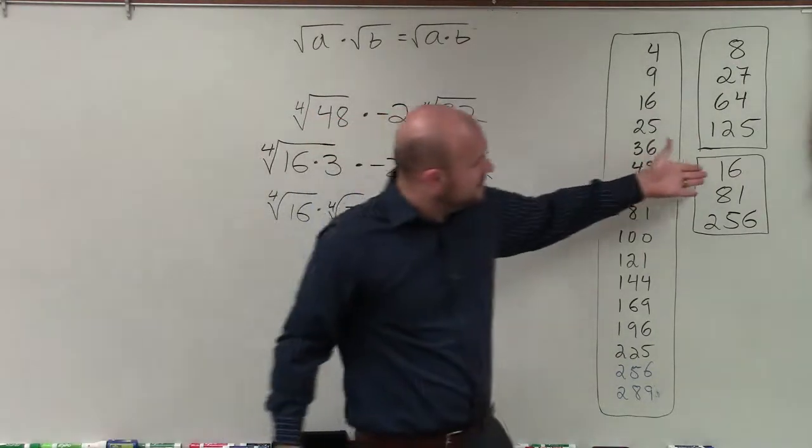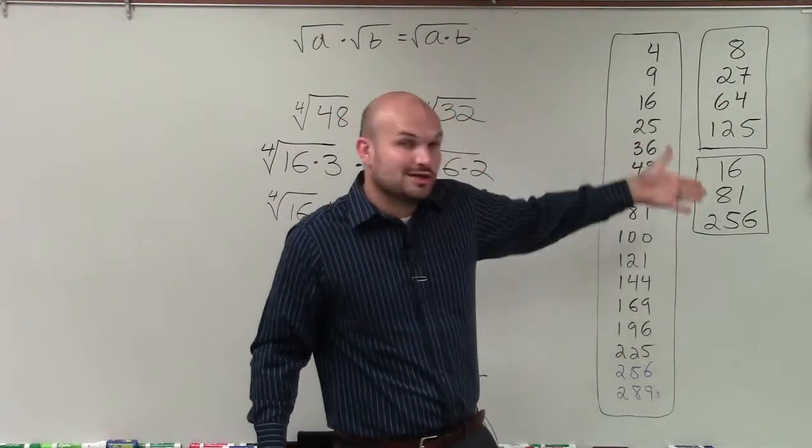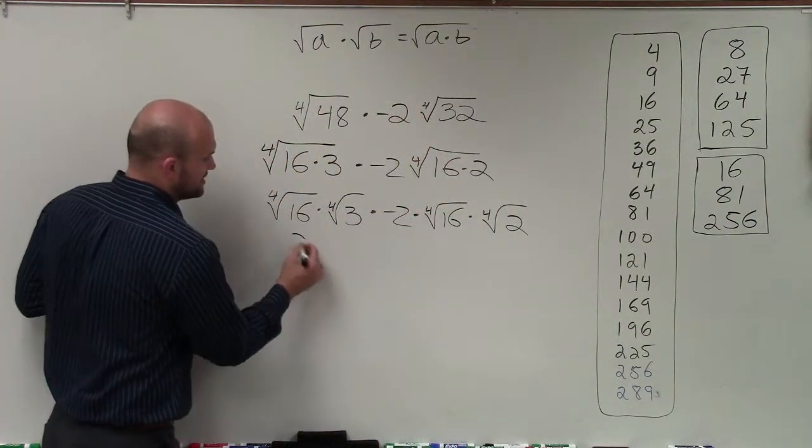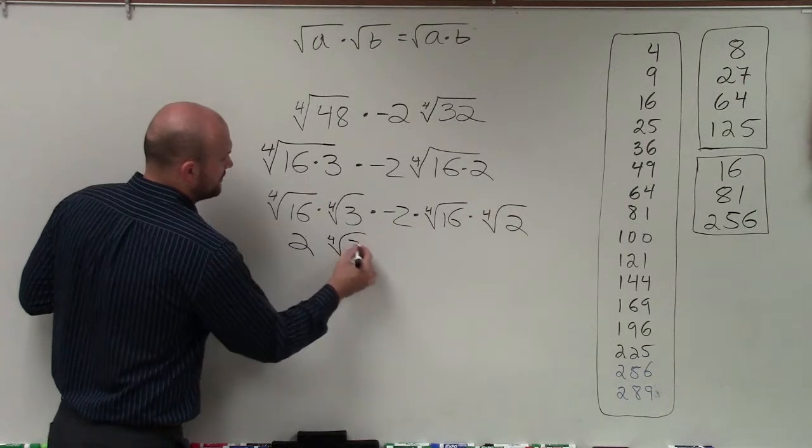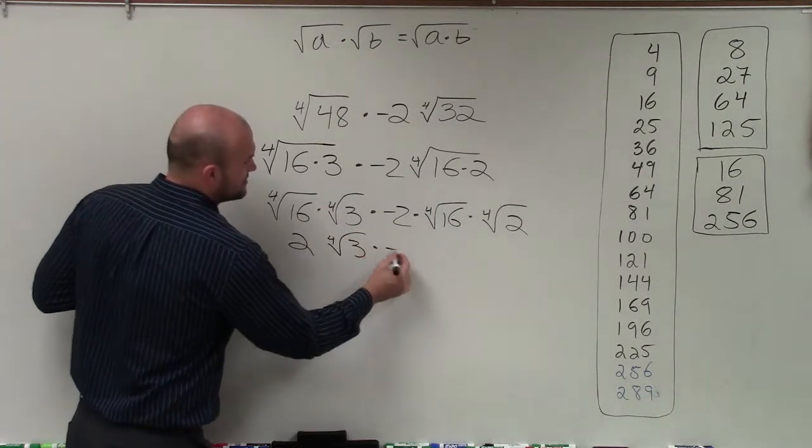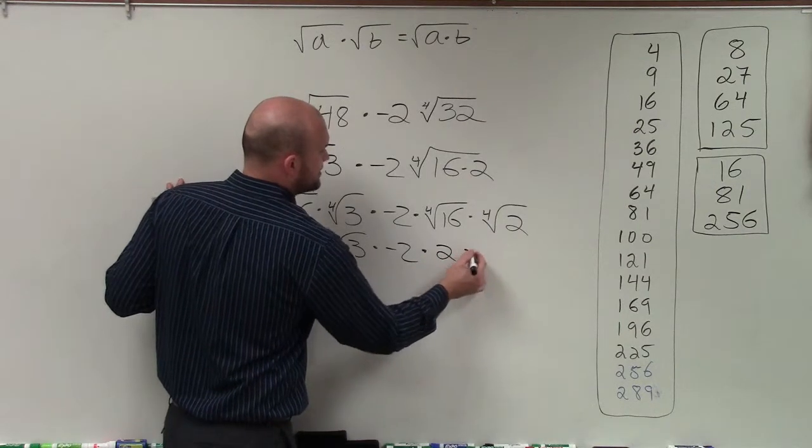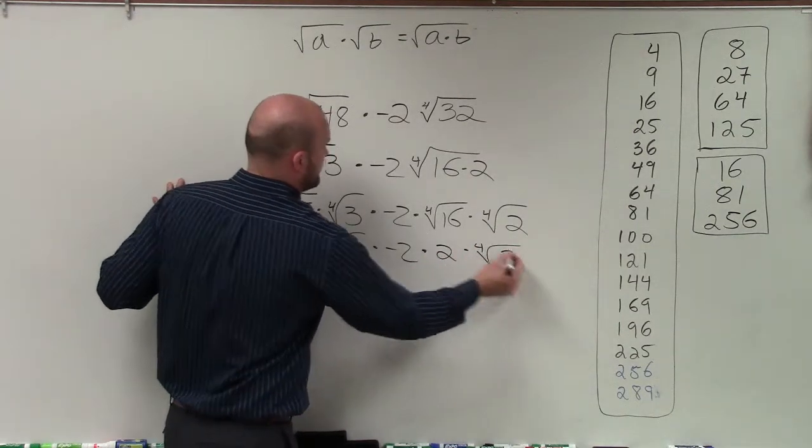And what's nice about that, as I mentioned, the fourth root of 16 is 2. 2 times 2 times 2 times 2. So the fourth root of 16 is 2 times the fourth root of 3, which I cannot do, times negative 2 times the fourth root of 16, which again is 2 times the fourth root of 2.